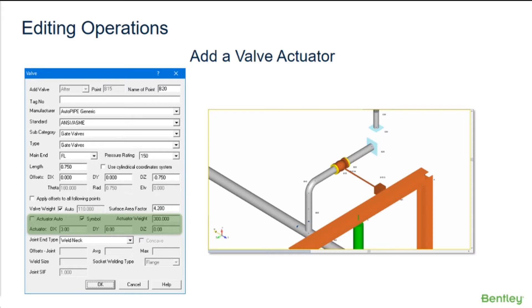When the actuator auto option is unchecked, the symbol, actuator weight, and actuator offsets are open for input. The default for the symbol option is unchecked, so a handwheel symbol will be drawn at the actuator offset D location.